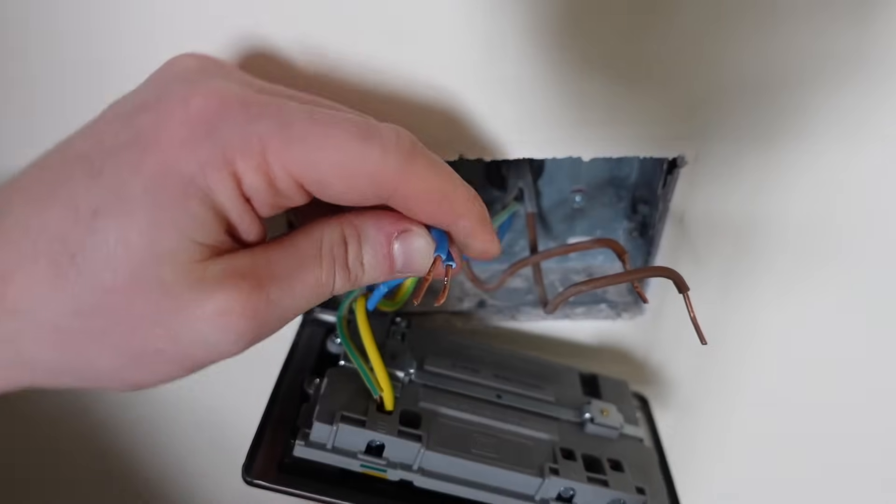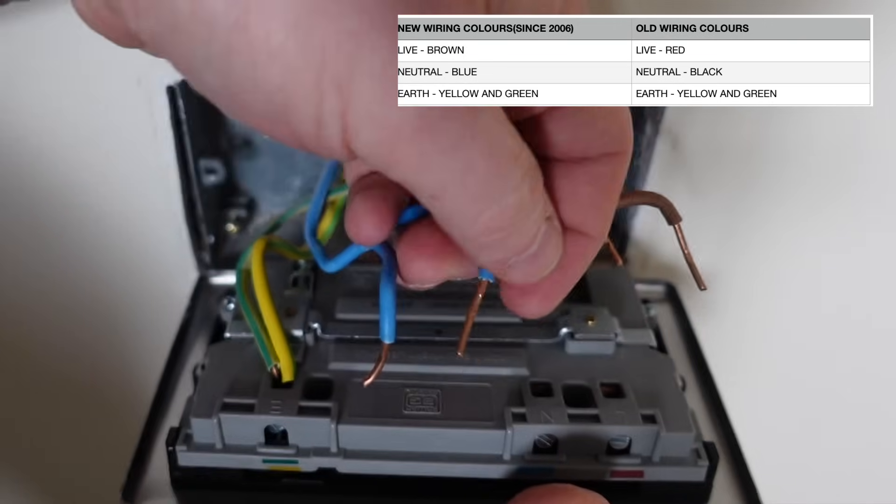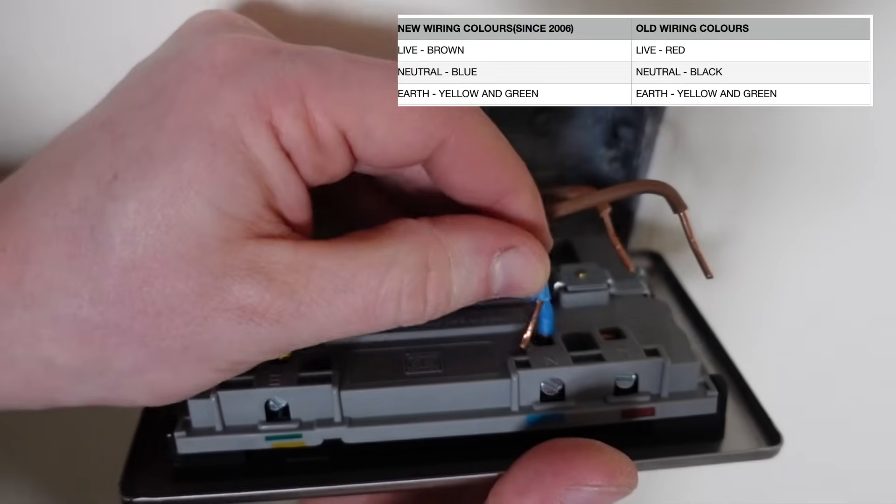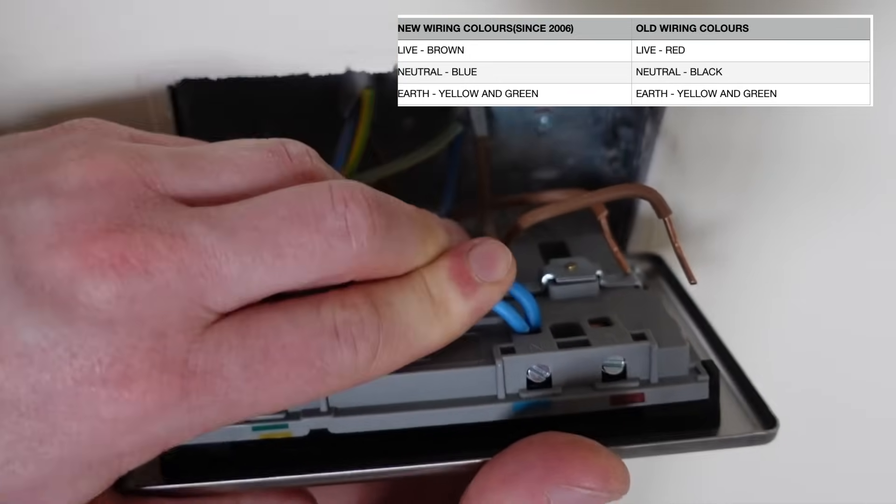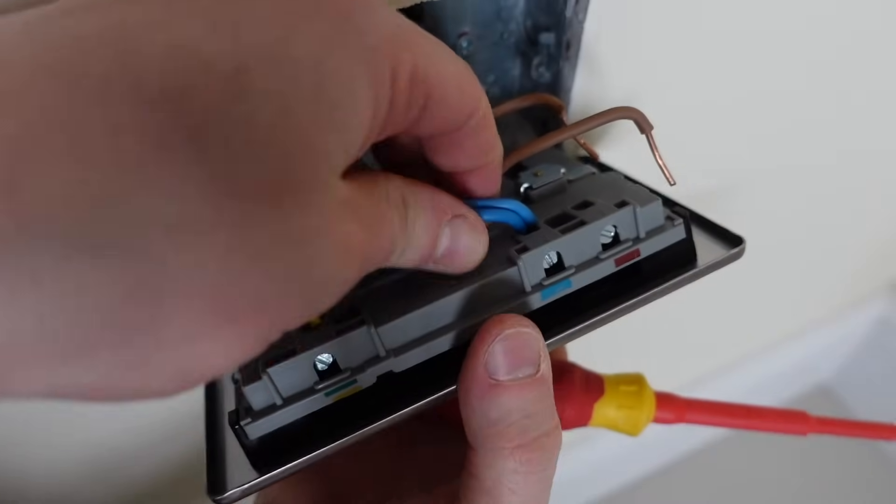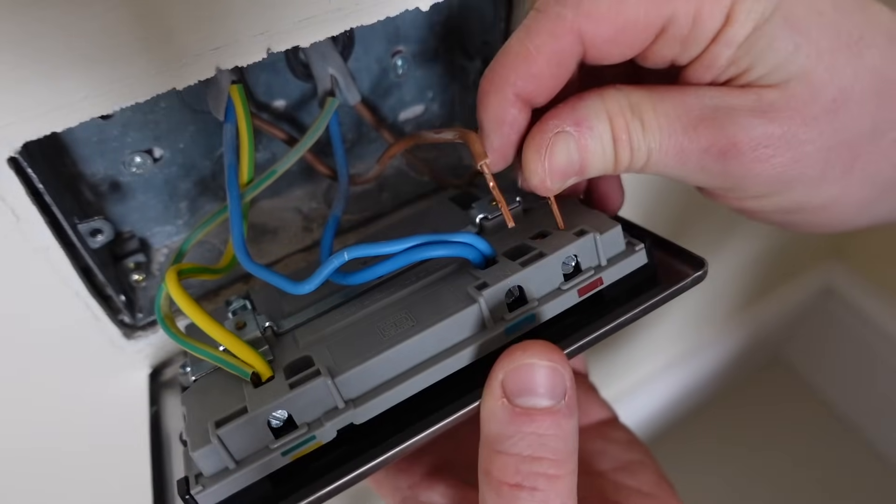Next, just take your insulation tape off the neutral wires and it makes it easier if they're bent over like a swan neck. And then just pop the neutral wires into the neutral terminal, do up the terminal screw nice and tight. And again, just give it a little tug to make sure it's in.